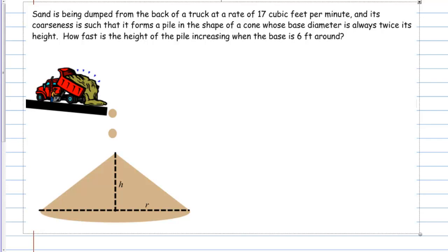We've already read the problem — the situation is we have sand being dumped from a dump truck and forming a pile. I have a picture set up with a few variables labeled — things that are changing during the scenario. The volume of sand coming out of the dump truck is labeled, and in our pile I've labeled h for the height of the cone-shaped pile and r for the radius, both of which change as sand is dumped.